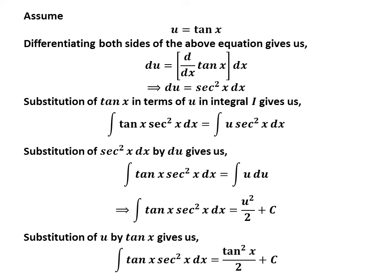Now, let us replace u by its value tangent of x, which we had assumed earlier. So, integral of tangent of x times square of secant of x is equal to square of tangent of x upon 2 plus capital C.